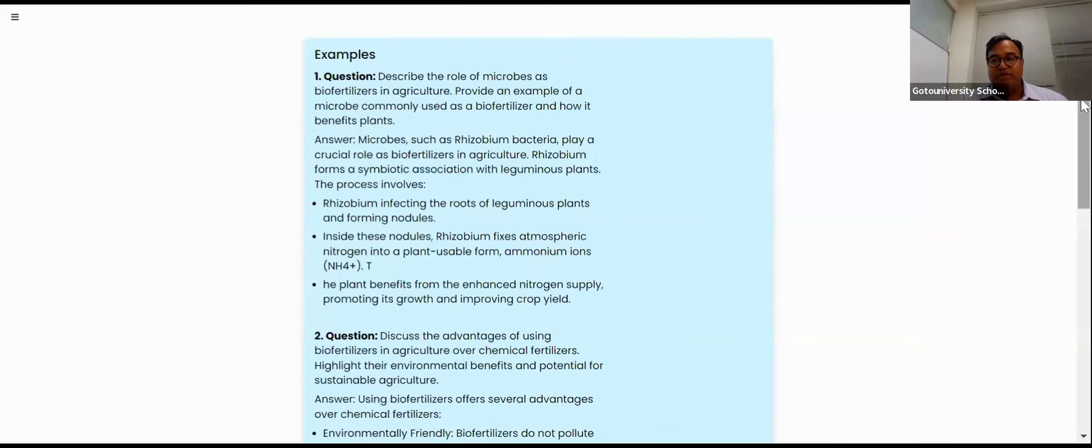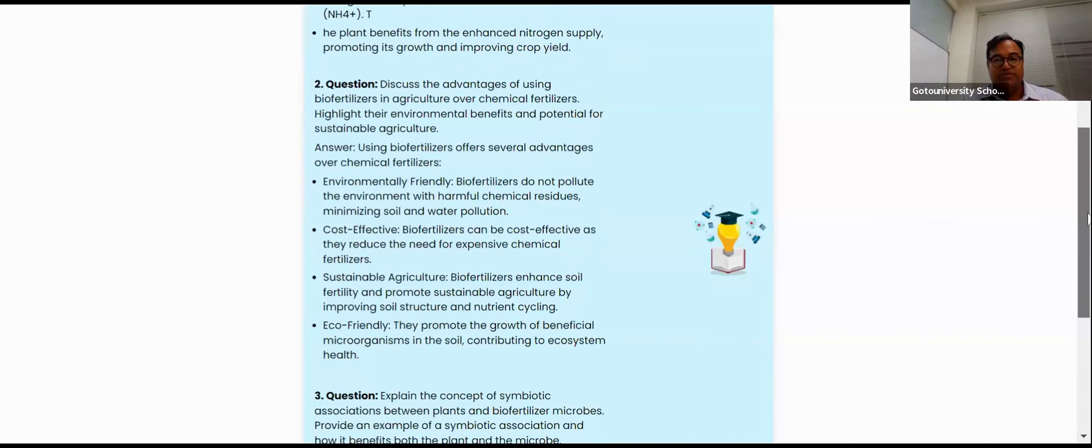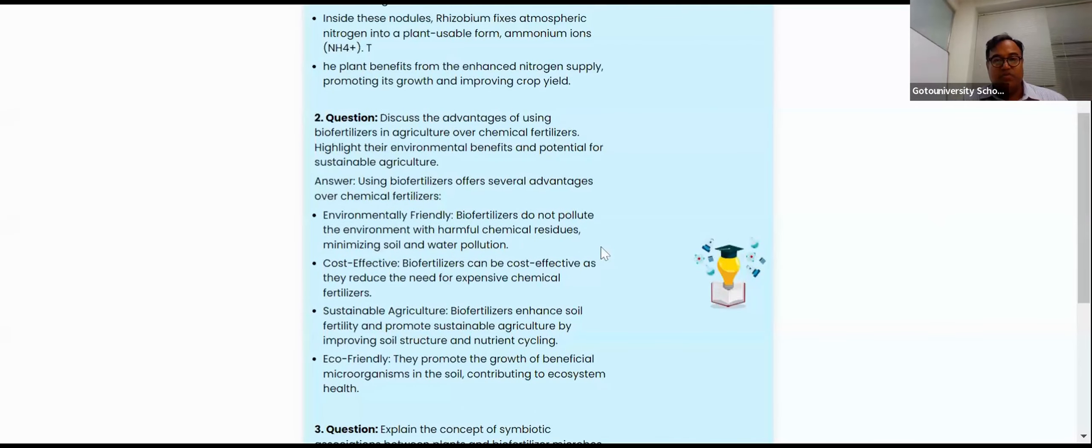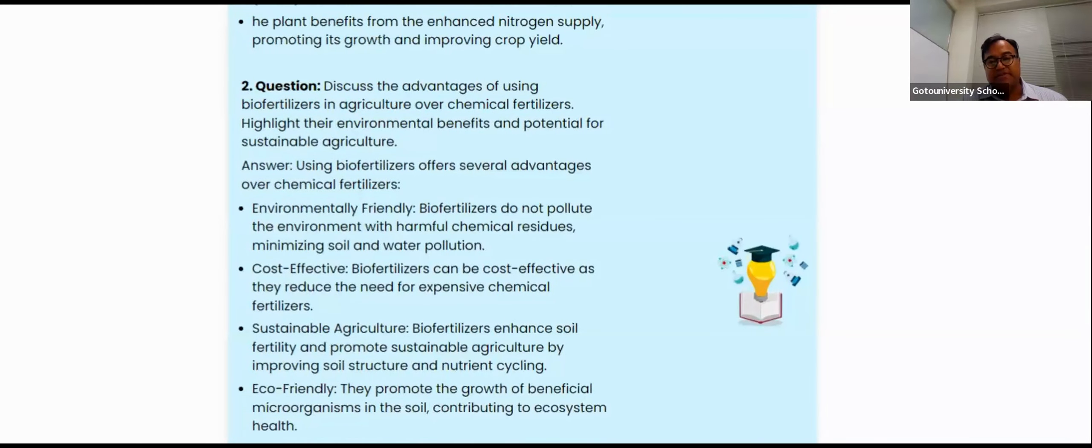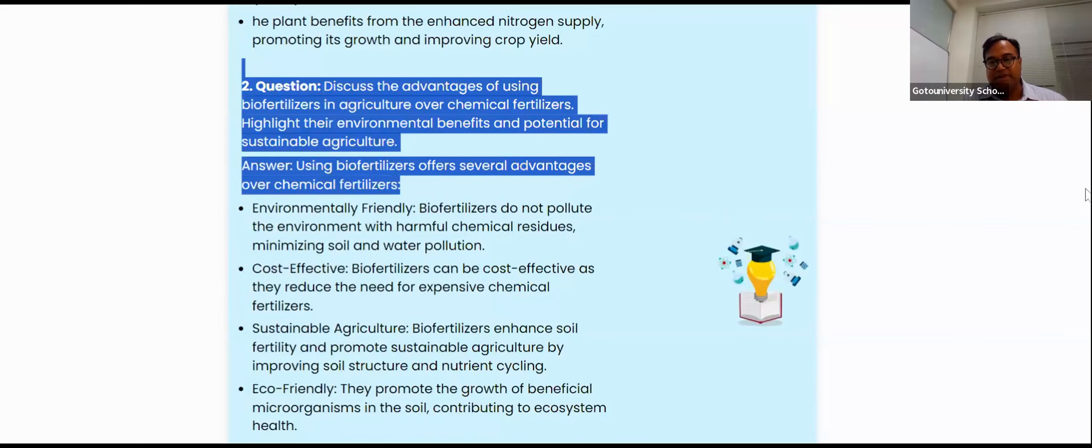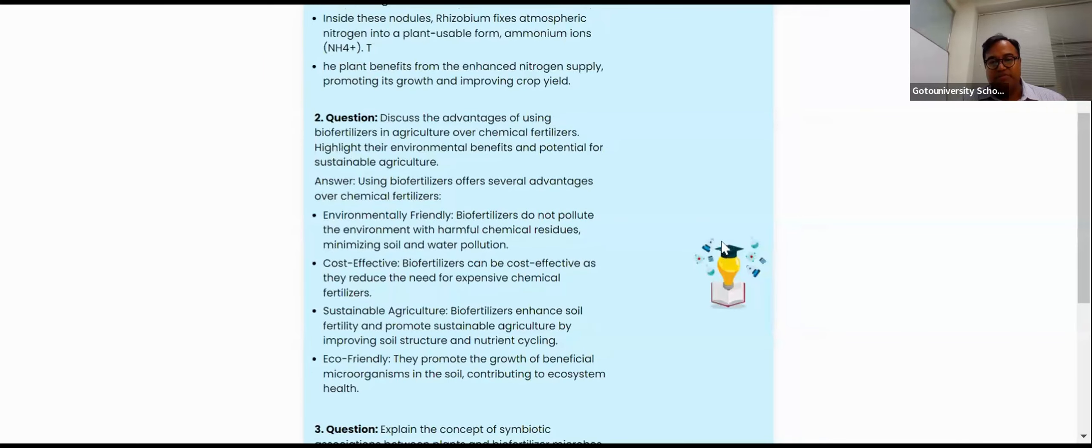Now we are coming for the next important point: discuss the advantage of using bio-fertilizer in agriculture over chemical fertilizer. We know very well chemical fertilizer creating the soil pollution. Chemical fertilizer not allows beneficial microbes to grow, whereas the bio-fertilizers makes the microbes to grow very nicely. So this is the way we need to remember in our mind.